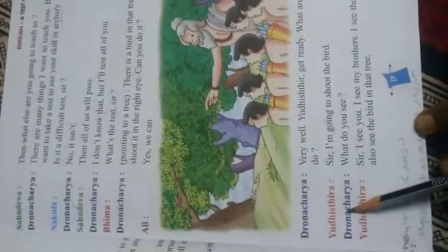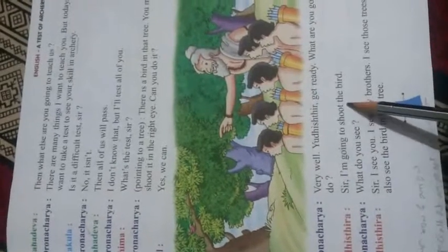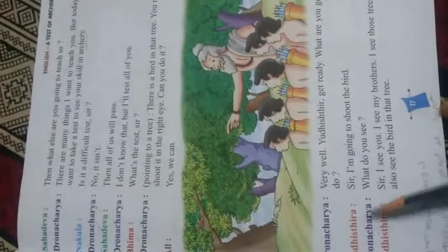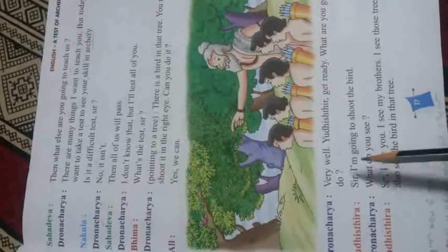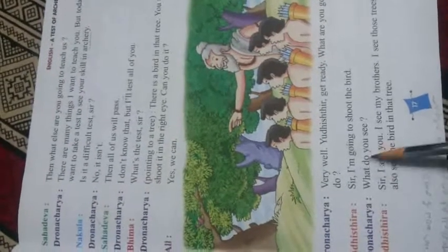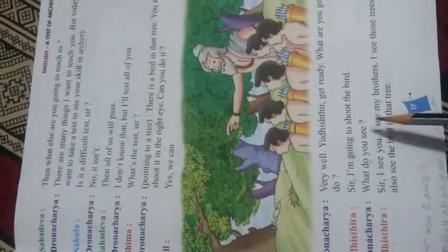Yudhishtar says: 'Sir, I am going to shoot the bird.' Dronacharya asks: 'What do you see?' — what are you seeing on that tree, what can you see with your eyes? Yudhishtar replies: 'Sir, I see you. I see my brothers. I see those trees. And I also see the bird in that tree.' He is able to see the teacher, his brothers, the trees, and the bird.